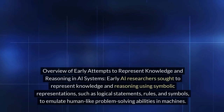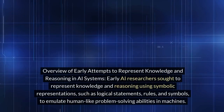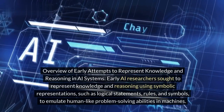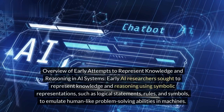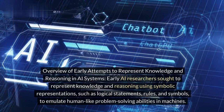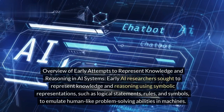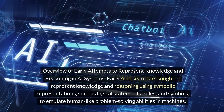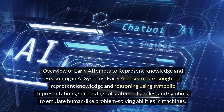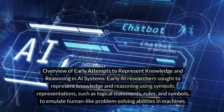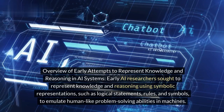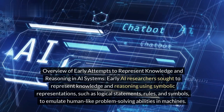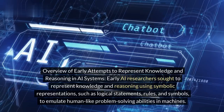Early AI researchers sought to represent knowledge and reasoning using symbolic representations, such as logical statements, rules, and symbols, to emulate human-like problem-solving abilities in machines.